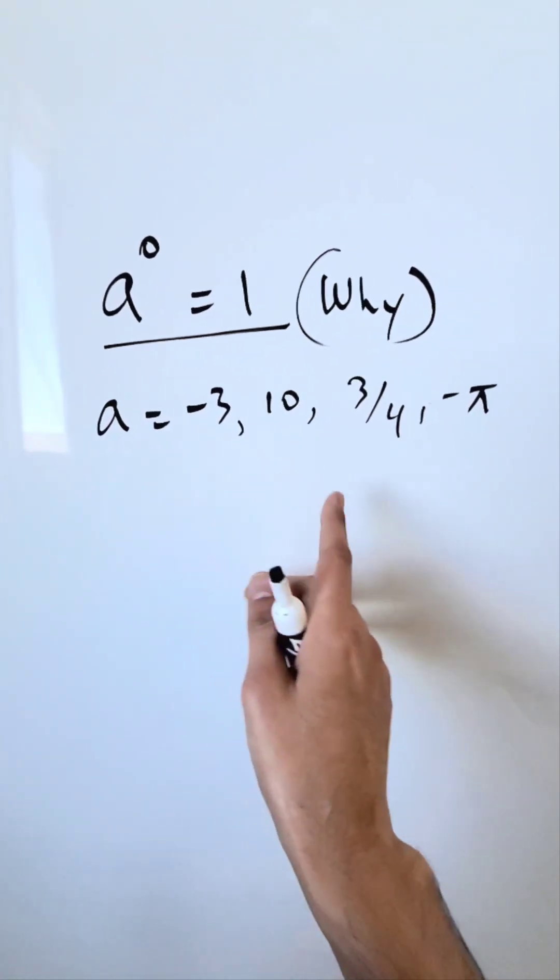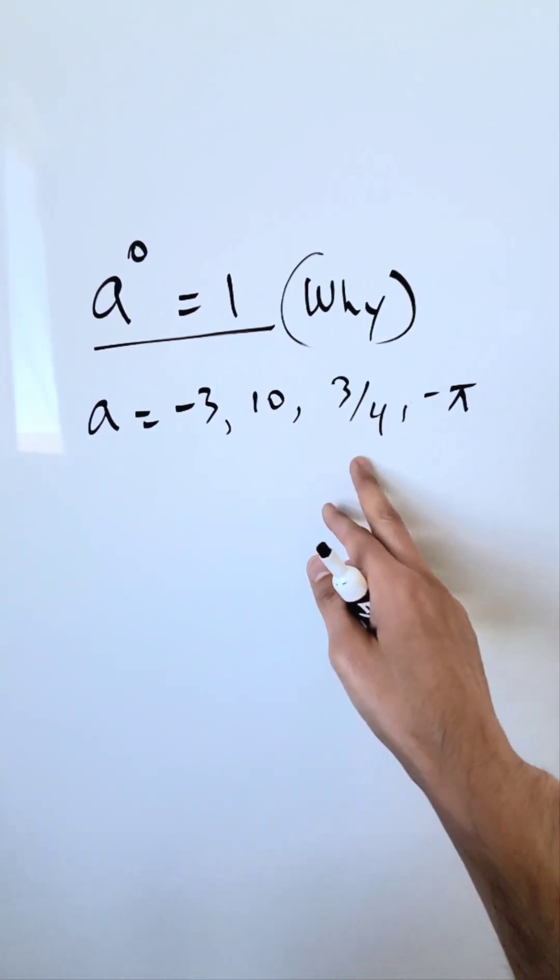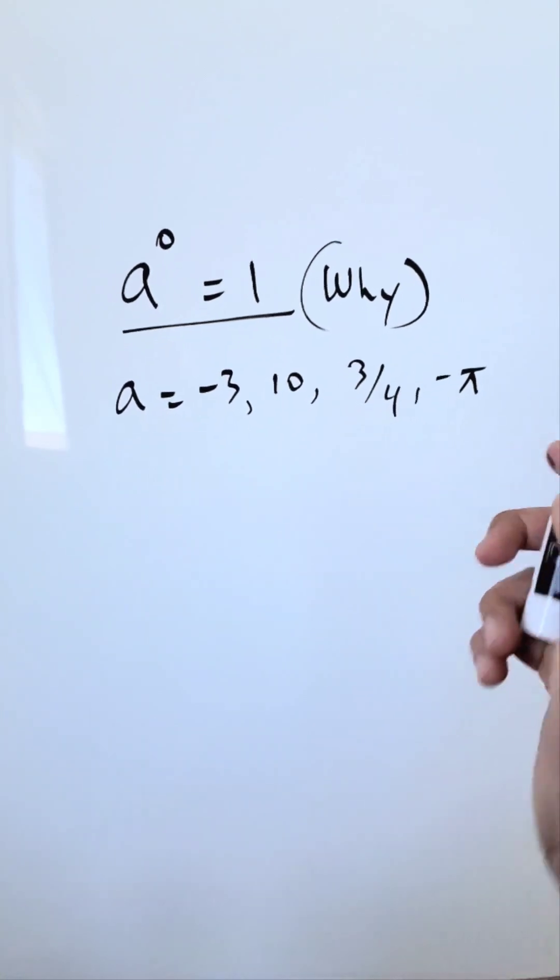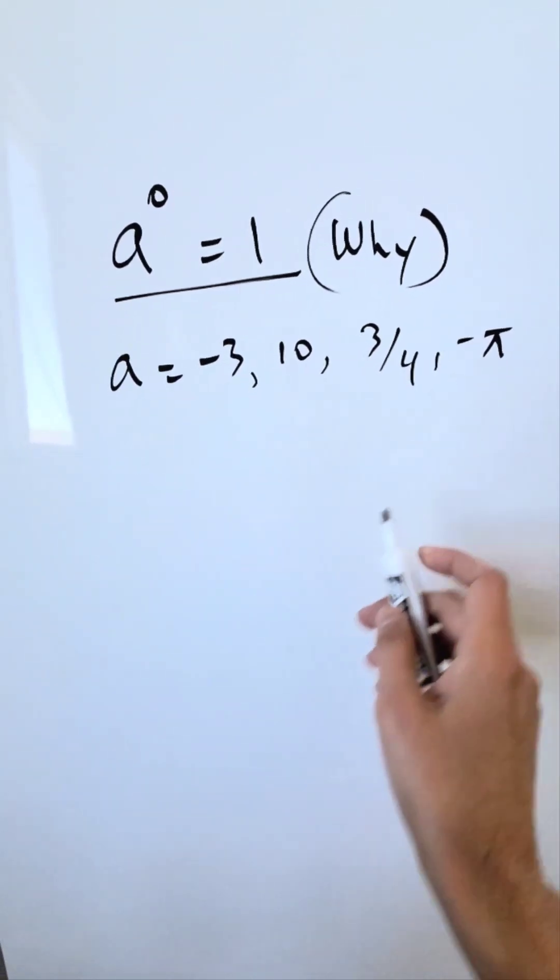a can be a natural number, whole number, integers, negative, positive, rational, irrational, all of that. To the power of 0, all of these are equal to 1. Why?